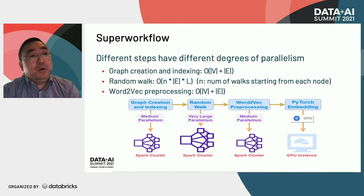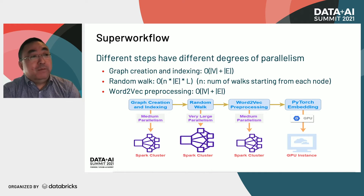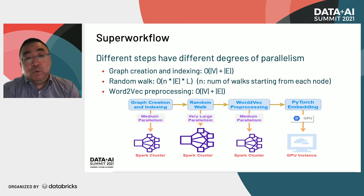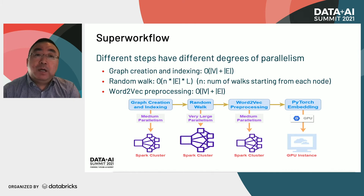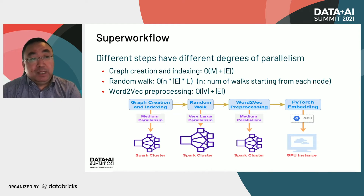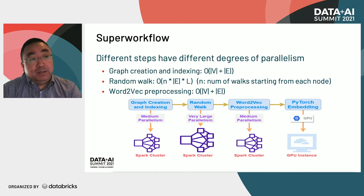We can create a super workflow by running each step in different computing frameworks with different degrees of parallelism. Each step also has very different time complexity — for example, the random walk step will require substantially more computing resources on large graphs. A super workflow is a workflow whose backend computing can be in very different frameworks, for example Python, Spark, PyTorch, and Dask. Also, these four steps can be managed by a single service instead of four different services. It's very important to use customized parallelism and resources at different steps.